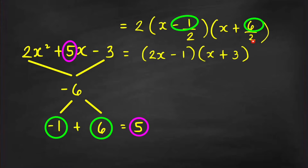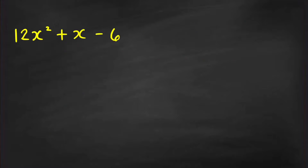Let's try another example. Let's factor 12x² + x - 6. If you're going to factor this by trial and error it might take a long time because 12 and 6 are not prime numbers. But let me show you how to factor it fast.